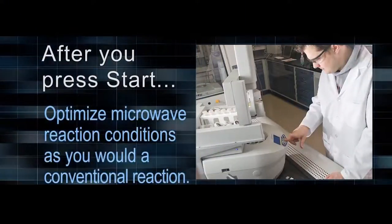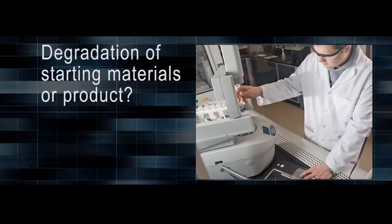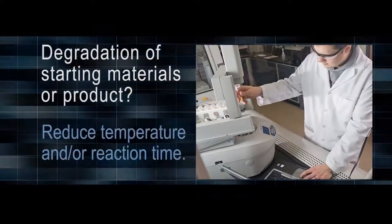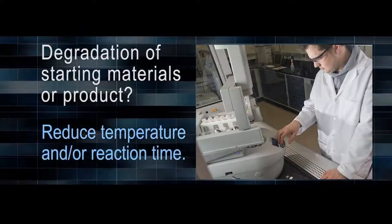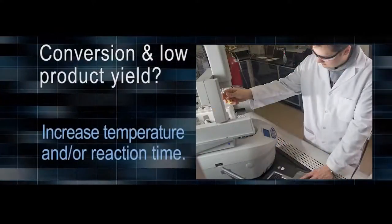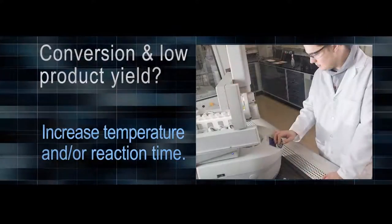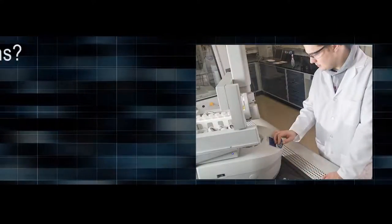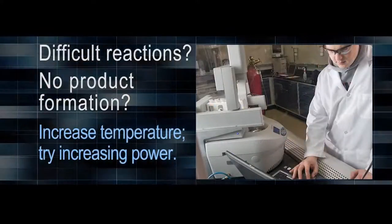After you press start, optimize your reaction conditions much as you would a conventional reaction. If analysis shows degradation of starting materials or product, reduce the temperature and/or the reaction time. If you observe conversion and low yield of desired product, increase the temperature and/or lengthen the reaction time. For those really difficult reactions where you see no product formation at all, increase the temperature or try increasing the power output if there are issues reaching the desired temperature.